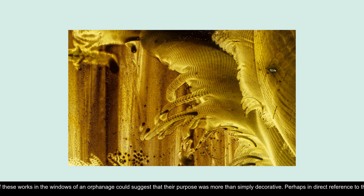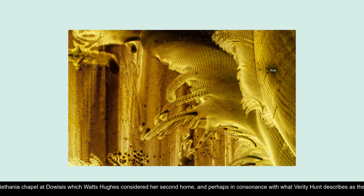The positioning of these works in the windows of an orphanage could suggest that their purpose was more than simply decorative, perhaps in direct reference to the windows of the Congregationalist Bethania Chapel at Dolice, which Watts Hughes considered her second home. And perhaps in consonance with what Verity Hunt describes as the era's privileging of magical wonder and enchantment in educational pursuits through optics and domestic display, these works were employed to perform the function of illumination in more than one sense of the word.